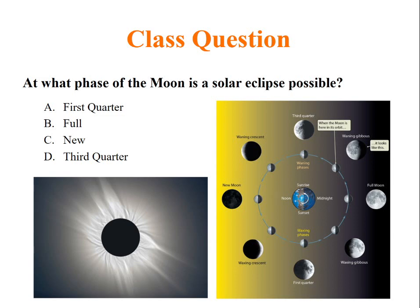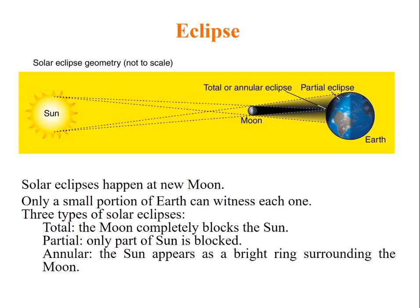The question is, at what phase of Moon is a solar eclipse possible? First quarter, full, new, or third quarter?